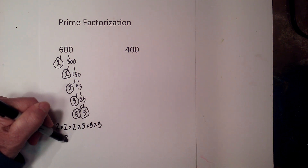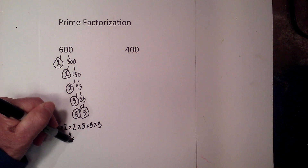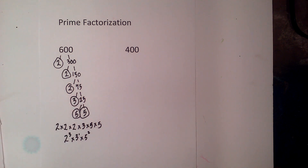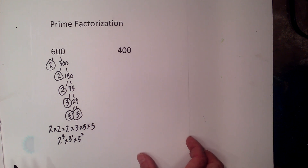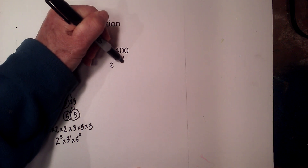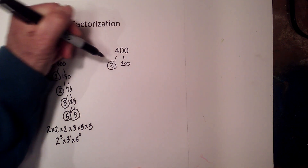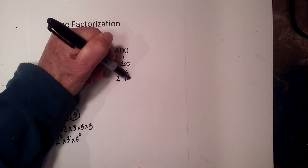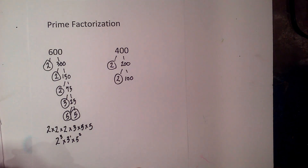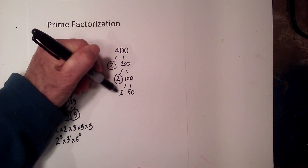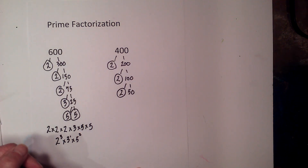You can rewrite that as 2 cubed times 3 to the first times 5 squared. So there we go, that's 600. Now let's take a look at 400. We begin with 2 times 200 — circle the 2 because it is prime. Then 2 times 100 equals 200 — circle the 2. Then 2 times 50 equals 100 — circle the 2.